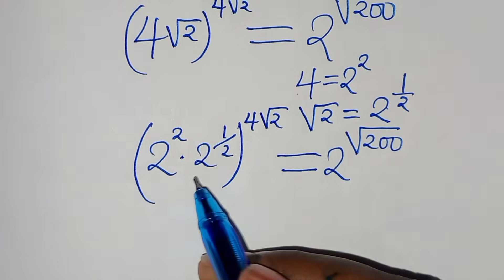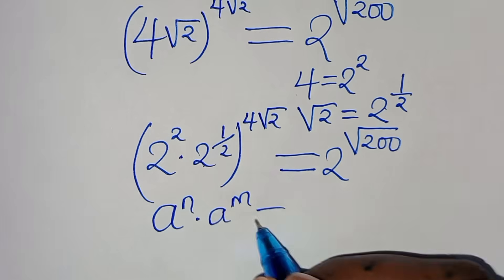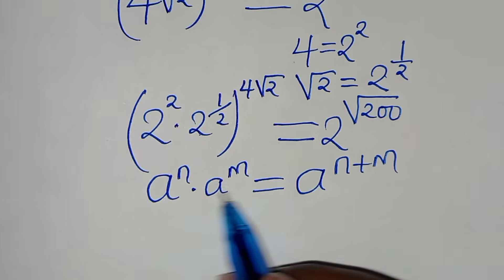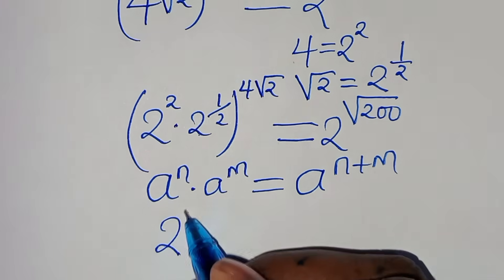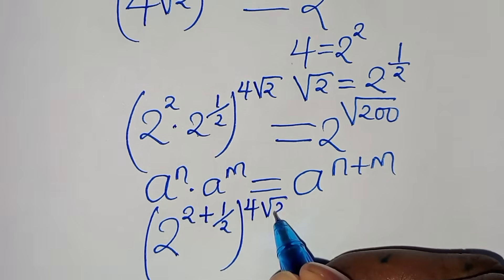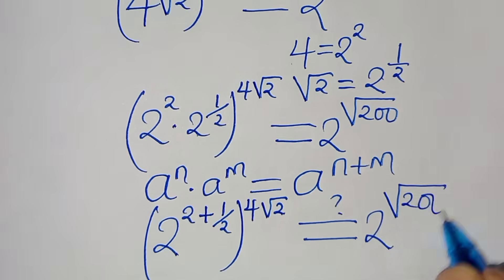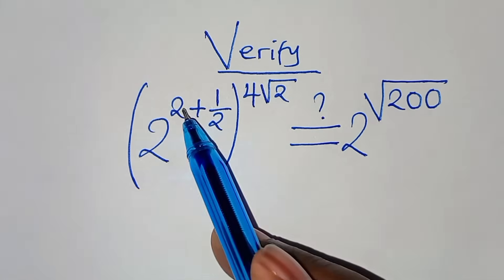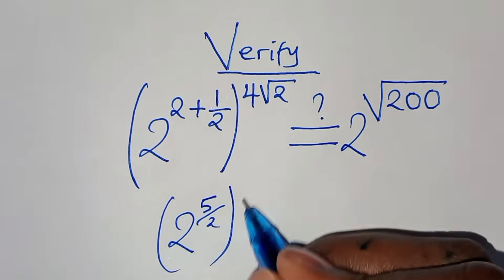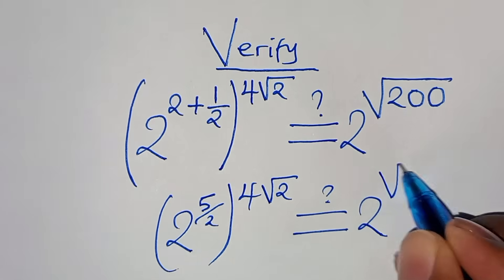Now 2 to the power of 2 times 2 to the power of a half is in the form a to the power of n times a to the power of m, which equals a to the power of n plus m. Applying this, we get 2 to the power of 2 plus a half, which is 2 to the power of 5 over 2, raised to the power of 4 square root of 2, equal to 2 to the power of square root of 200.